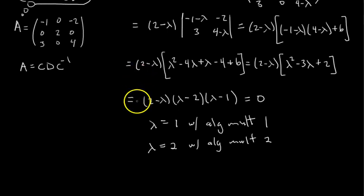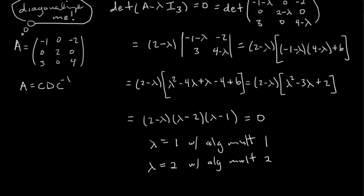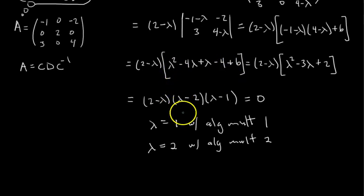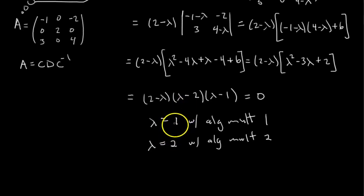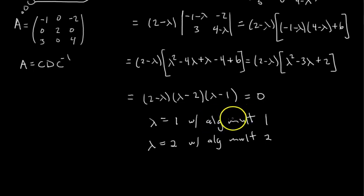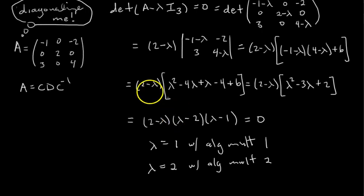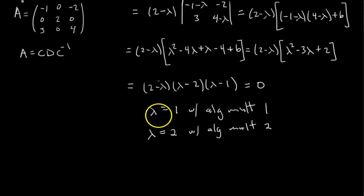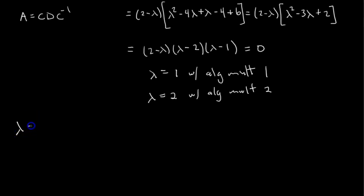If we had found three distinct eigenvalues right away we'd know the matrix is diagonalizable, but we only have two — so now it's a maybe. If lambda equals 2 has geometric multiplicity 2, then the sum of geometric multiplicities would be 2 plus 1 equals 3, and by that theorem if the sum of geometric multiplicities equals the number of rows, the matrix is diagonalizable. So we got to check: what is the dimension of the lambda equals 2 eigenspace?